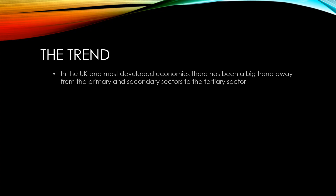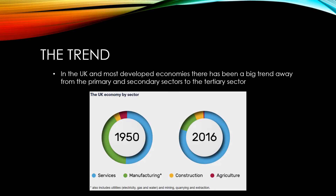The UK, like most developed economies, has seen a big trend away from primary and secondary sectors to the tertiary sector. In 2016, more than three quarters of workers were employed in the tertiary sector, compared to about half of workers in 1950. There had also been big losses in manufacturing and agriculture between 1950 and 2016.